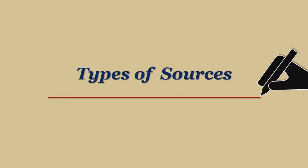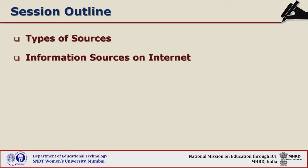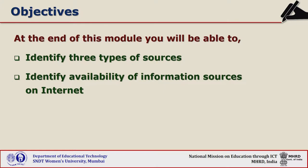Types of sources. This session covers the types of sources for literature search and information sources on the internet. At the end of this module you will be able to identify three types of sources — that is primary, secondary and tertiary — and also identify availability of information sources on the internet.